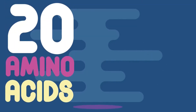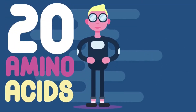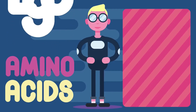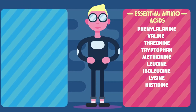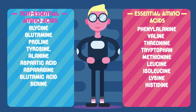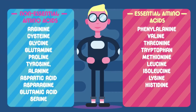There are 20 amino acids that make up our body's proteins. Nine of these we need to take in through our diet as our body cannot manufacture them. These are known as essential amino acids. Our body can, however, manufacture non-essential amino acids.